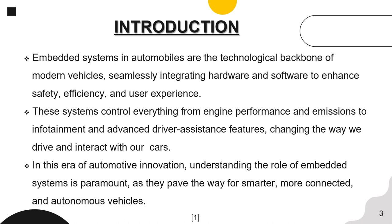Embedded Systems in Automobiles are the technological platform of modern vehicles, seamlessly integrating hardware and software to enhance safety, efficiency, and user experience. These systems control everything from engine performance and emissions to infotainment and advanced driver assistance features, changing the way we drive and interact with our cars. In this era of automotive innovation, understanding the role of Embedded Systems is paramount, as they pave the way for smarter, more connected, and autonomous vehicles.